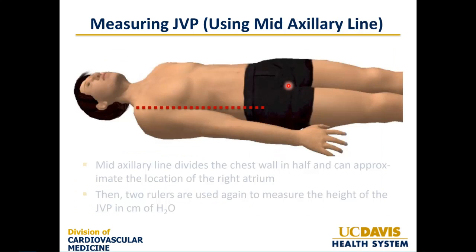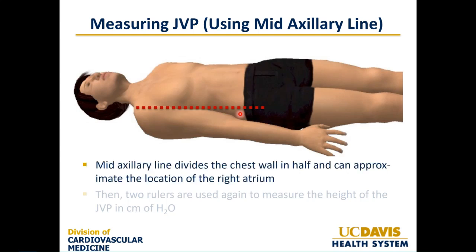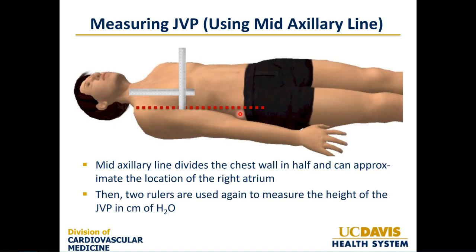The issue with using the sternal angle is that patients have different body habitus and five centimeters from the right atrium to the sternal angle may not be correct. A preferred technique uses the mid-axillary line — an imaginary line that divides the chest wall in half — which is a better approximation of the location of the right atrium. Two rulers are used again: a vertical ruler from the mid-axillary line and a horizontal ruler at the meniscus. Where they intersect in centimeters of water is the jugular venous pressure, and no additional correction is needed.